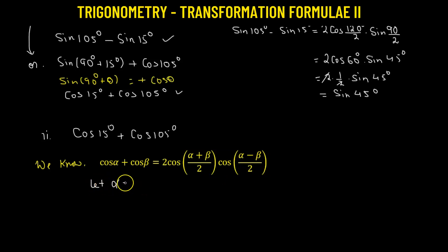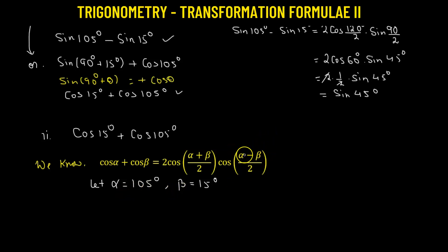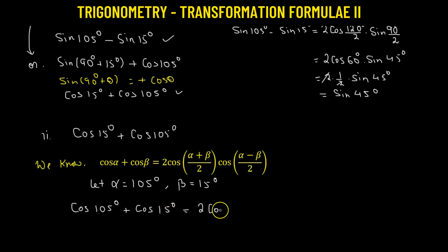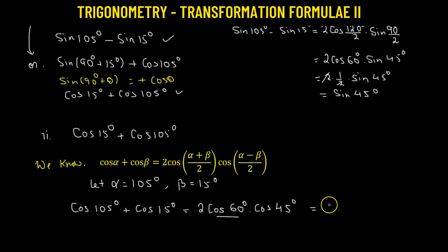We'll take alpha greater than beta, so alpha is 105 degrees and beta is 15 degrees — keeping alpha greater than beta makes computing alpha minus beta easier. Substituting: cosine 105° + cosine 15° = 2 · cos((105+15)/2) · cos((105−15)/2) = 2 · cos(120/2) · cos(90/2) = 2 · cos 60° · cos 45°. Cosine 60° is one half, so two times one half gives one, leaving us with cosine 45 degrees.